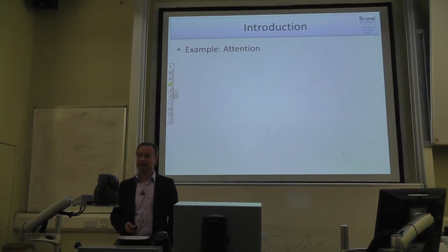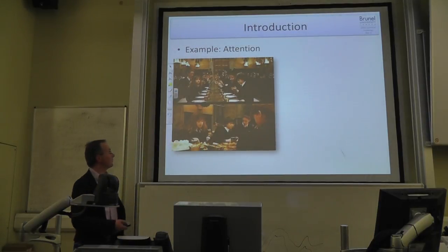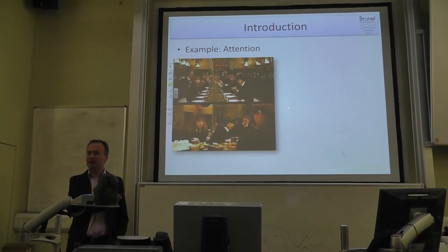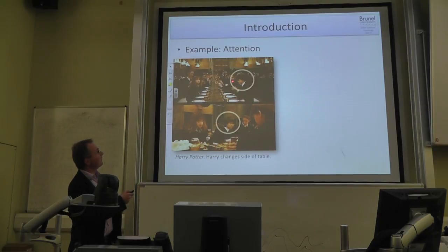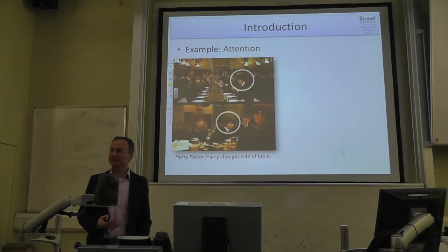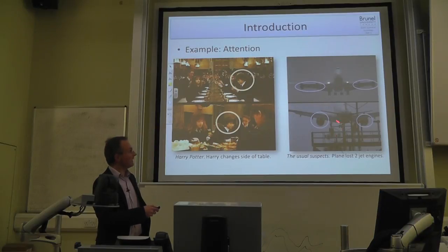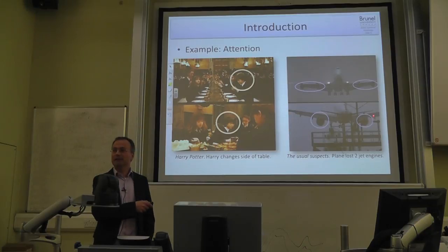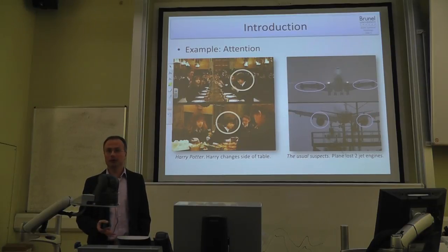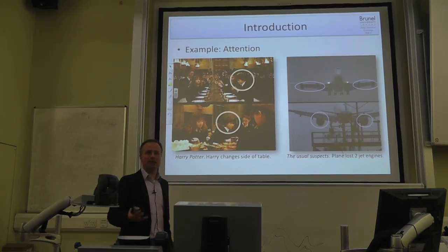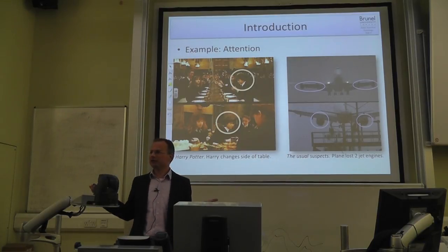Another example from attention: in two consecutive Harry Potter scenes, Harry sits on opposite sides of the table — virtually nobody notices. That's inattentional blindness. In The Usual Suspects, a plane approaching has two jet engines in one shot and one in the next — completely different planes, but people don't notice. How can we miss such obvious things when we think we have a good impression of our environment?